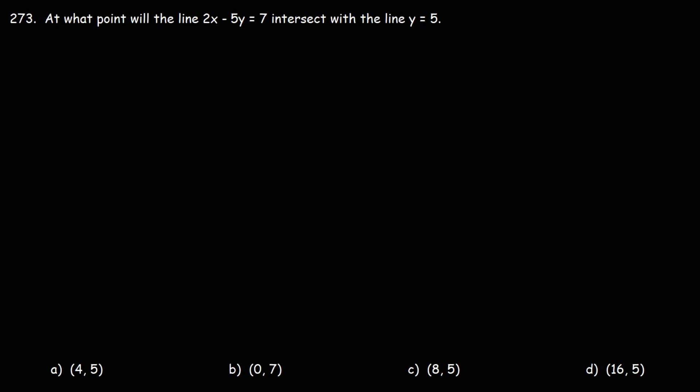273. At what point will the line 2x minus 5y equals 7 intersect with the line y equals 5?